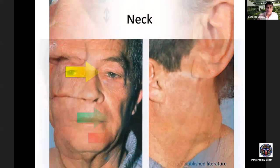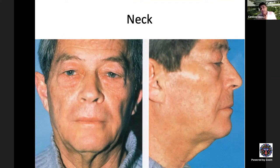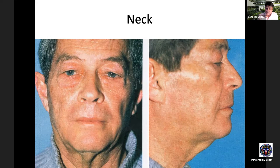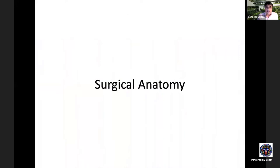Additional aging changes include prominence of the labiomandibular fold and jowl sulcus. In the neck, there is laxity of skin under the chin, causing an obtuse, ill-defined cervicofacial angle and a less defined lower mandibular border. This results from skin and platysmal muscle laxity, platysmal banding, and excess subcutaneous or deep cervical fat — all features addressed by facelift surgery.